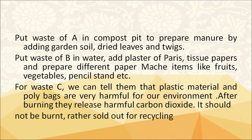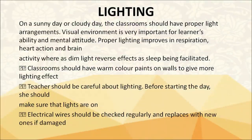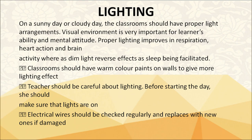What should the lighting system in schools and classrooms be? On a sunny or cloudy day, classrooms should have proper light arrangements. Visual environment is very important for learners' ability and mental attitude. Proper lighting improves respiration, heart action and brain activity, whereas dim light has reverse effects such as facilitating sleep. Classrooms should have warm-color paints on walls to give more lighting effect. Teachers should ensure lights are on before starting the day, and electrical wires should be checked regularly and replaced if damaged.